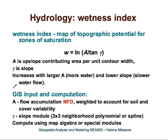Another useful index that is very easy to compute in GIS is the so-called wetness index, which maps topographic potential for zones of saturation. It is dependent on upslope area — which measures how much water will be coming through each cell — and slope. The wetness index or topographic potential for saturation will increase with increasing contributing area, so more water coming in means a higher index, and also with lower slope — the flatter it is, the slower water flows, which increases saturation.